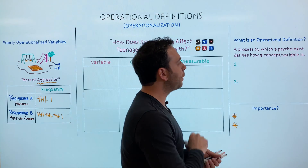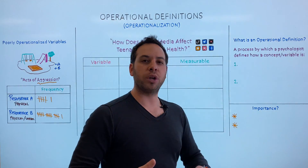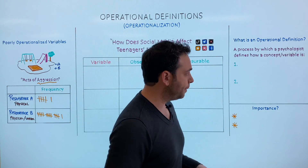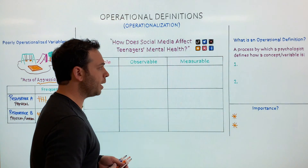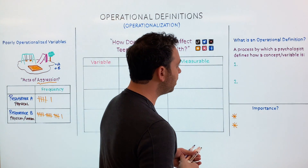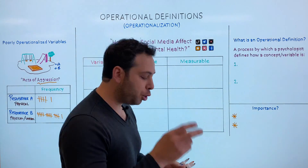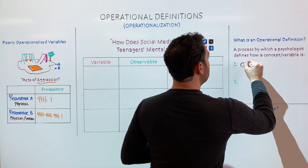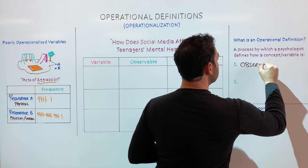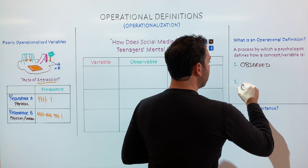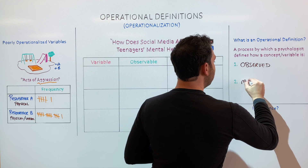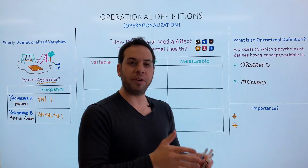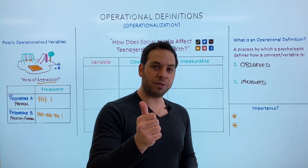This is a perfect segue into what operational definitions actually are. The reason we call these operational definitions is because an operation is another word for a procedure. So we're essentially saying how we're defining the procedures or activities in the study. An operational definition is a process by which a psychologist defines how a concept or variable is observed and how a concept or variable is measured.